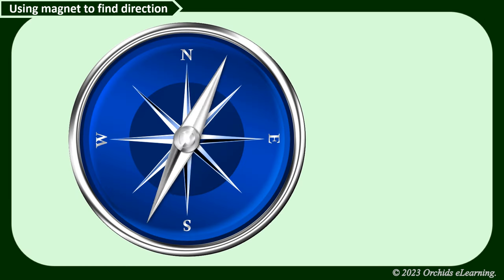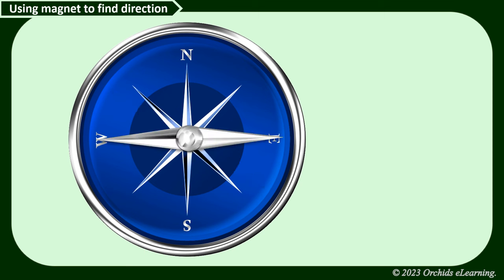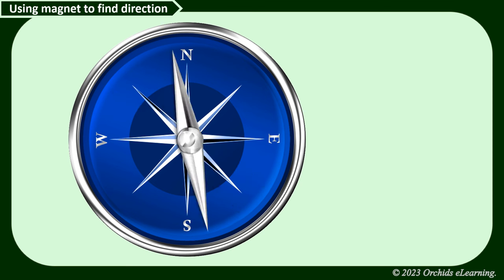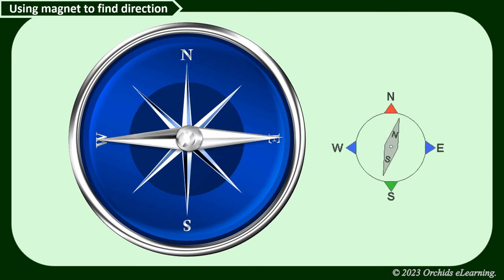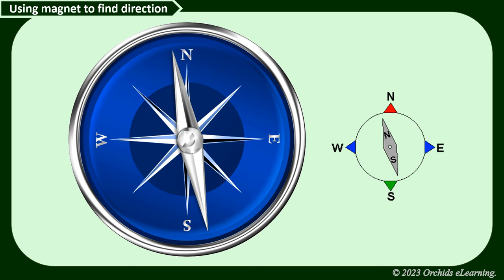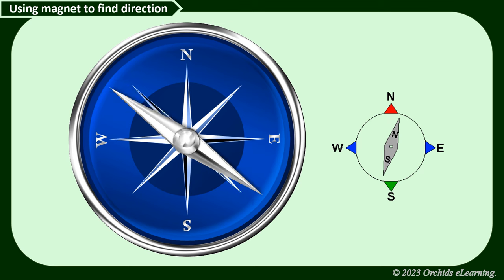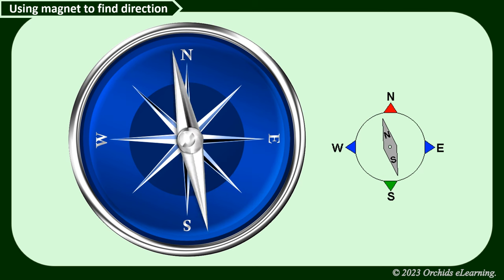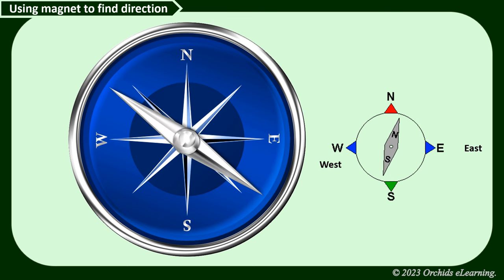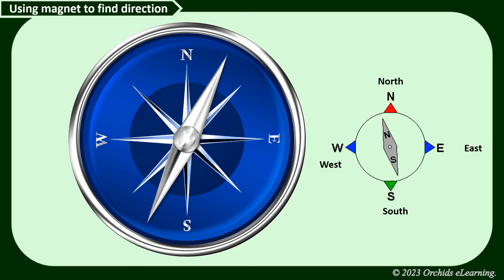A magnetic compass is usually a small box with a small magnetic needle at its center. This needle can rotate freely and always points in the earth's north-south direction. Different directions — east, west, north, and south — are also marked on it.